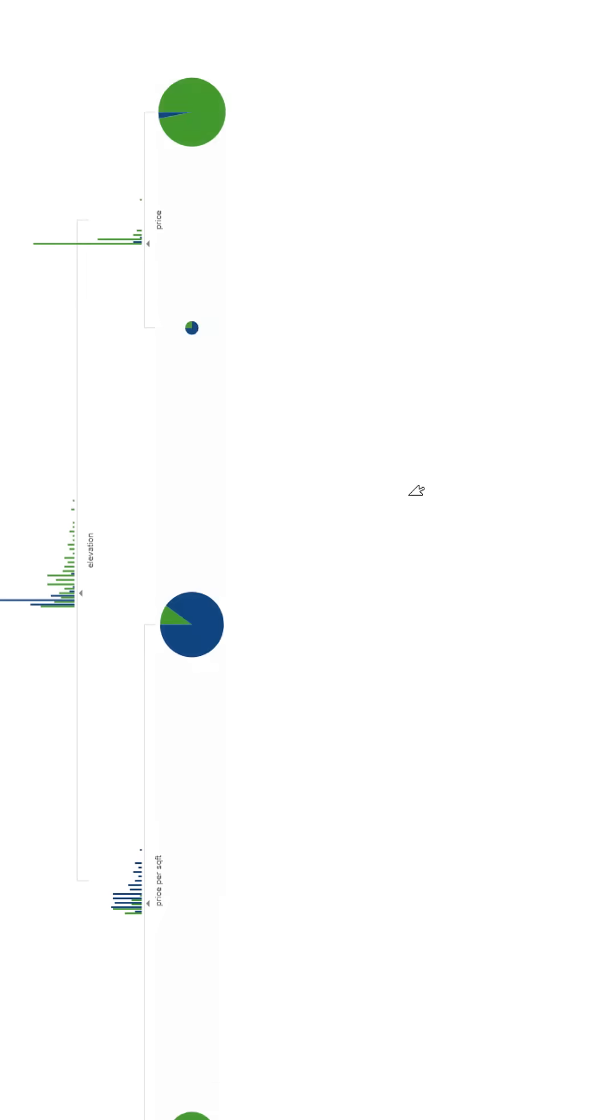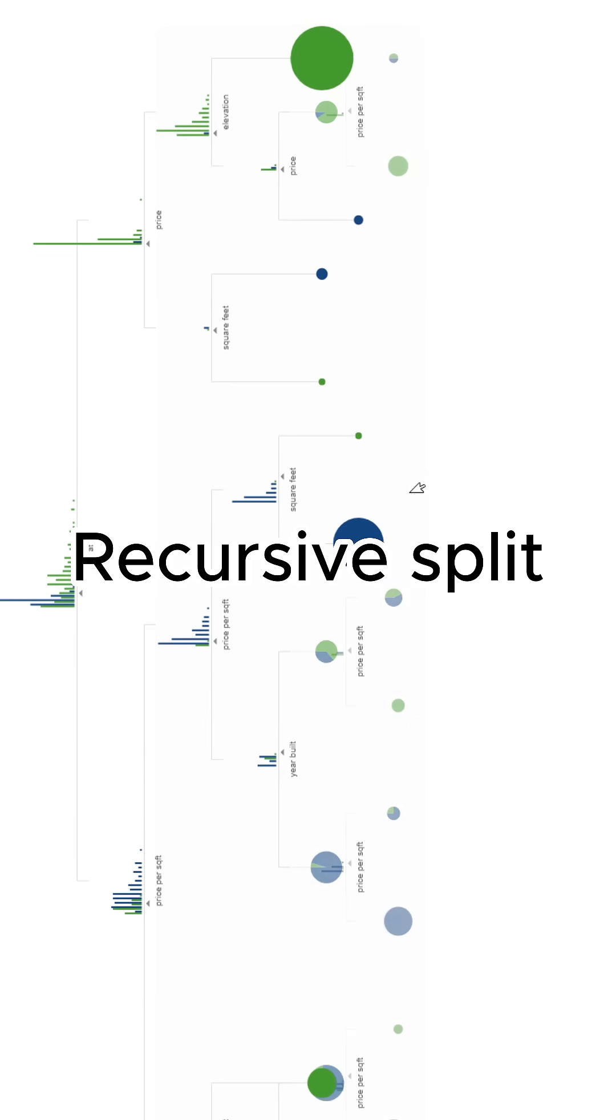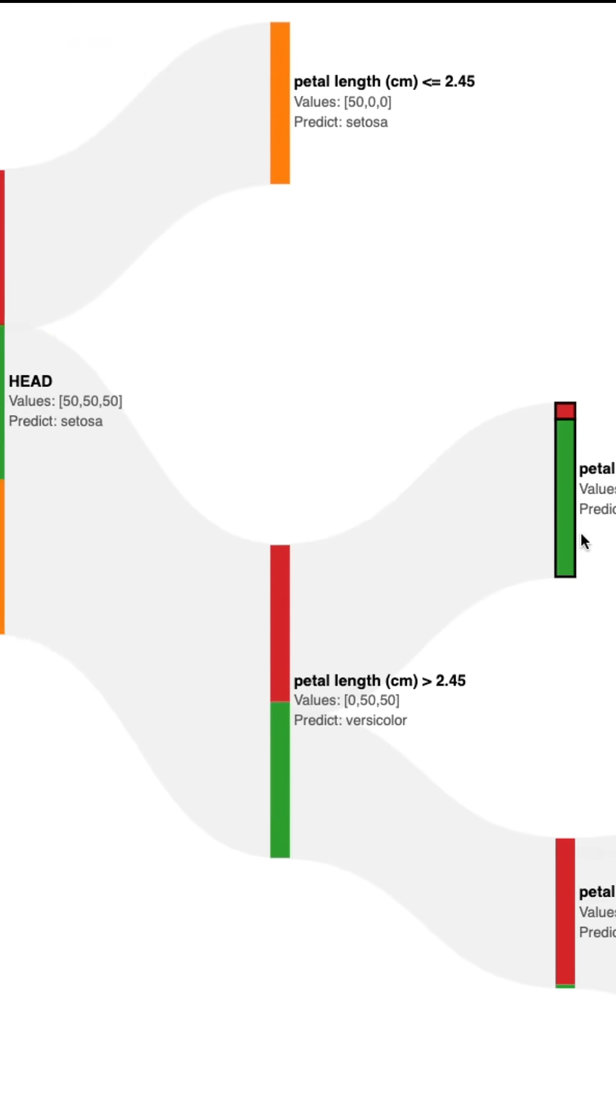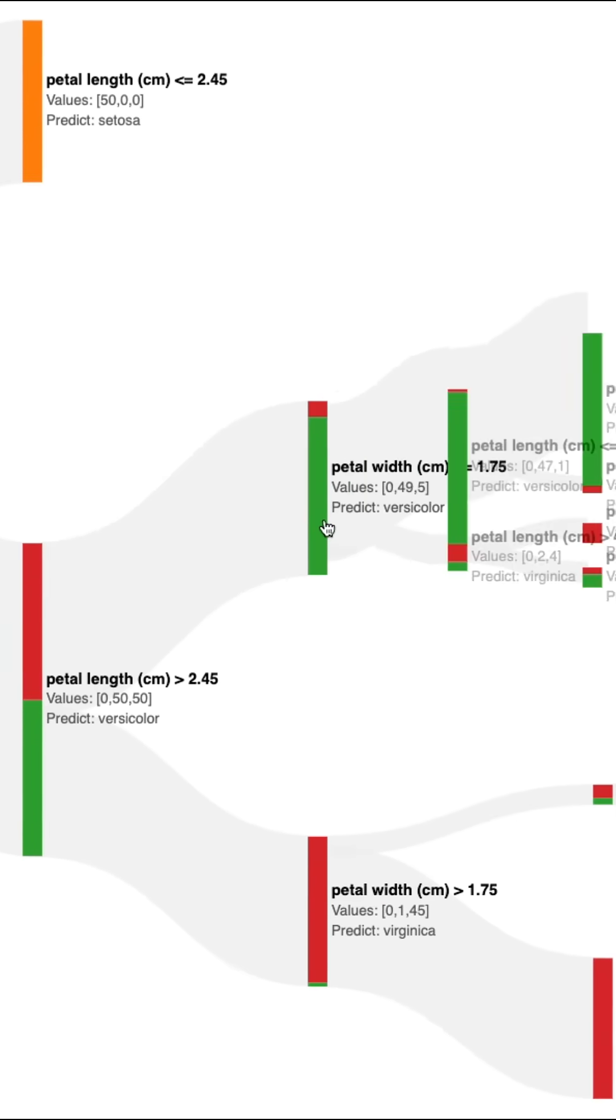Hence, decision trees are built through a process of recursively splitting the data into subsets based on the most informative feature, where the goal is to create a tree which can make accurate predictions on new and unseen data.